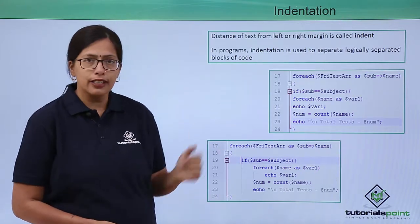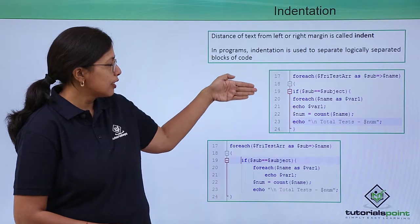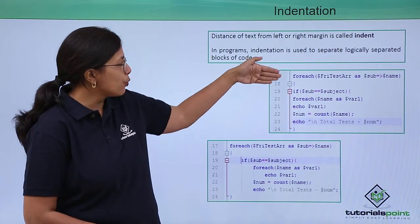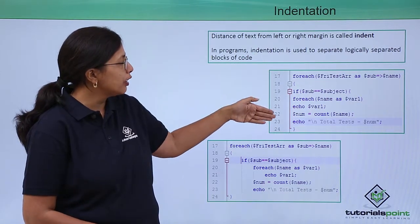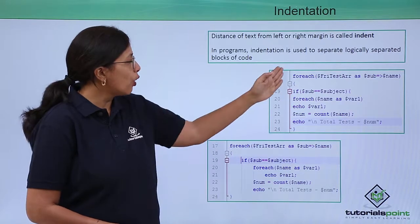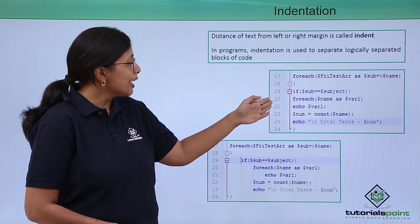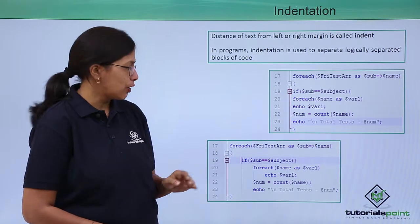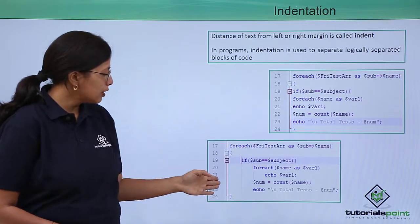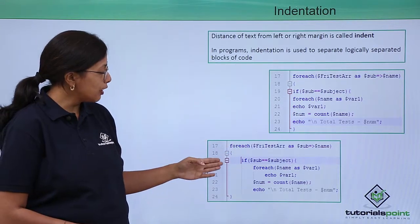Let's take an example. Just look at this set of five sentences — it has been written one after the other with no indentation. All the lines have the same distance from the left margin. Now, take a look at the same example here — what has been done here?